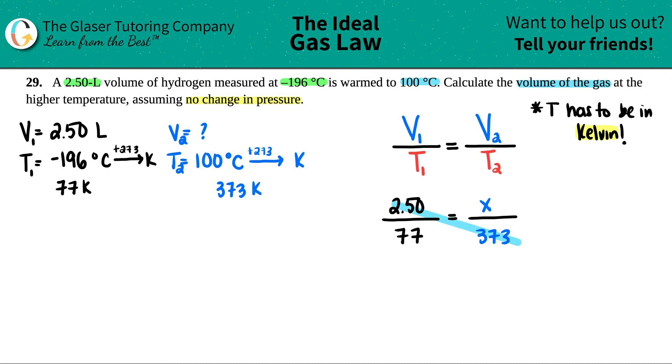Seems like cross multiplication for me. Pretty simple enough, right? So we got 77 times X, and this equals 2.5 times 373. So let's see. 373 times 2.5. I get 932.5. And then just divide by the 77. And let's see what we get. So divide by 77. I get